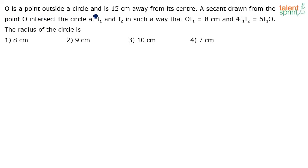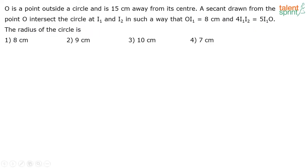O is a point outside a circle and is 15 centimeters away from its center. A secant drawn from point O intersects the circle at I1 and I2 such that OI1 equals 8 centimeters and 4 times of I1I2 equals 5 times of I1O. The options for the radius of the circle are 8, 9, 10, or 7 centimeters.